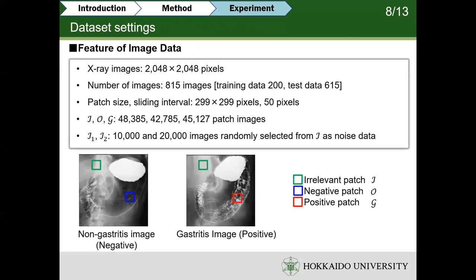I'd like to introduce the features of medical data used in our experiment. The X-ray images are high-resolution. In the data site, there are 815 images. As training data, we used 200 images, and the rest were used as test data. We divided them into patches of 299 by 299 pixels. As a result, we obtained irrelevant patch images, negative patch images, and positive patch images. Moreover, we selected 10,000 and 20,000 images randomly from irrelevant patch images as noise data.